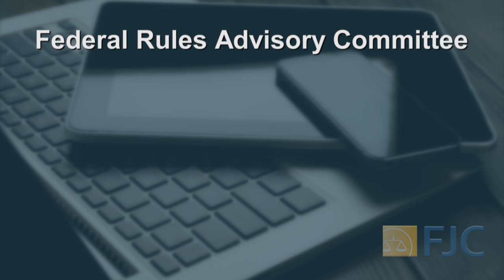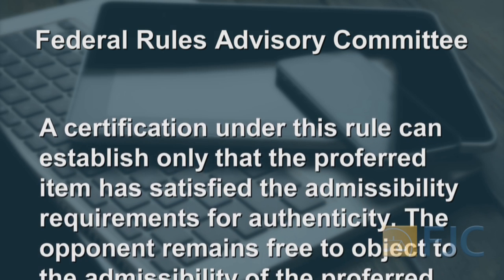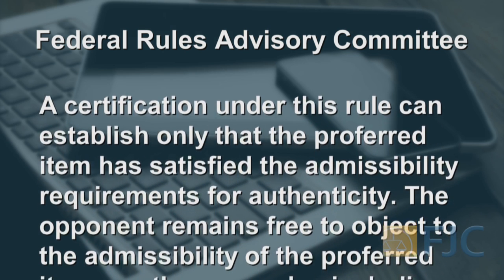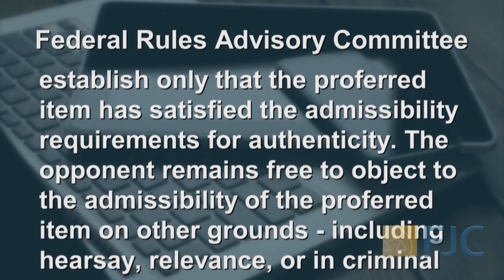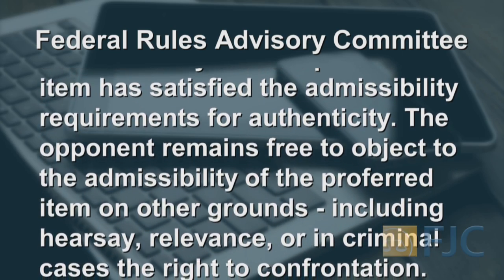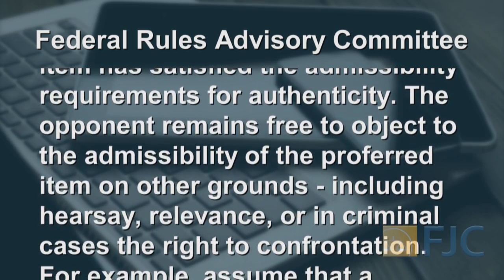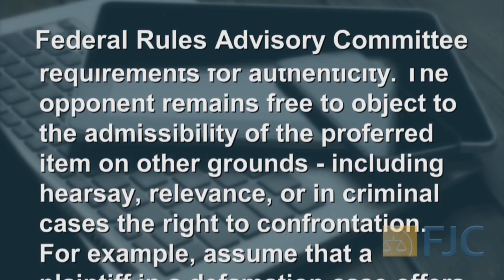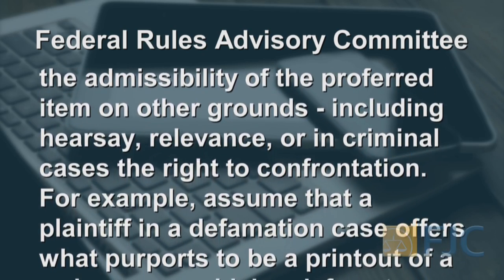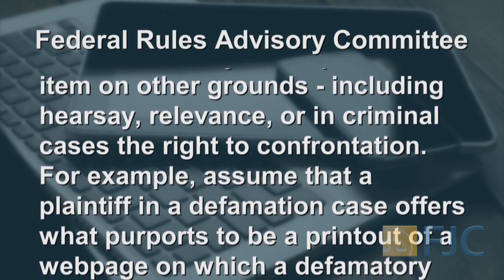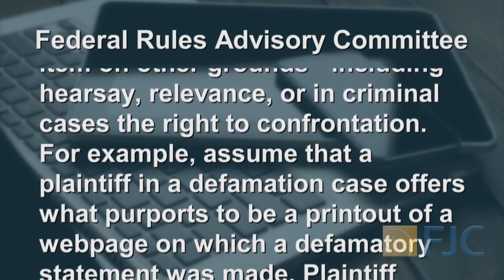The Evidence Rules Advisory Committee explains, in a note accompanying the amendment, what authentication does and does not mean. A certification under this rule can establish only that the proffered item has satisfied the admissibility requirements for authenticity. The opponent remains free to object to the admissibility of the proffered item on other grounds, including hearsay, relevance, or, in criminal cases, the right to confrontation.